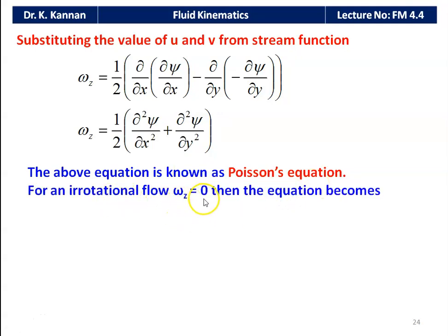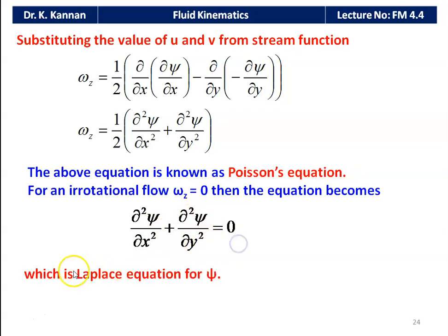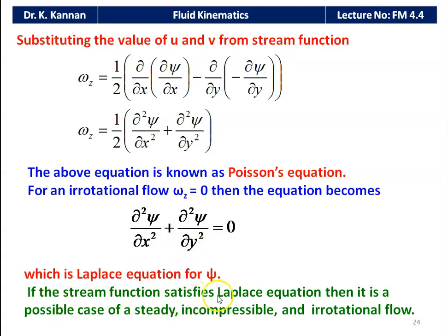For irrotational flow, ω_z = 0, and the equation becomes ∂²ψ/∂x² + ∂²ψ/∂y² = 0. This is called the Laplace equation for psi in a two-dimensional plane. In the Poisson equation the right-hand side has a value, while in the Laplace equation it equals zero. When the stream function satisfies the Laplace equation, it represents a possible case of steady, incompressible, and irrotational flow — the same conclusion as for the velocity potential function.